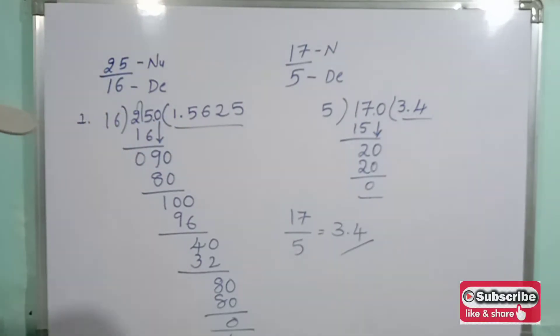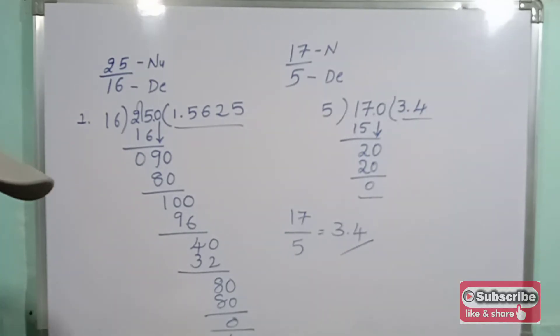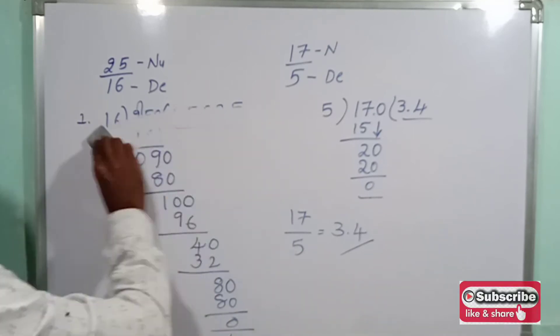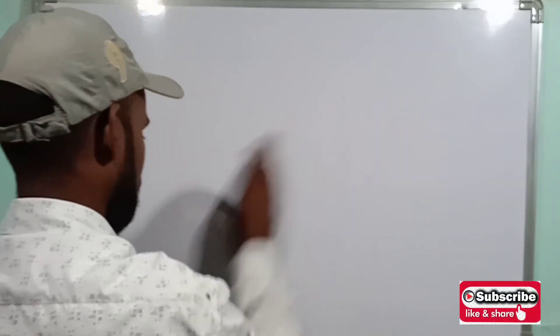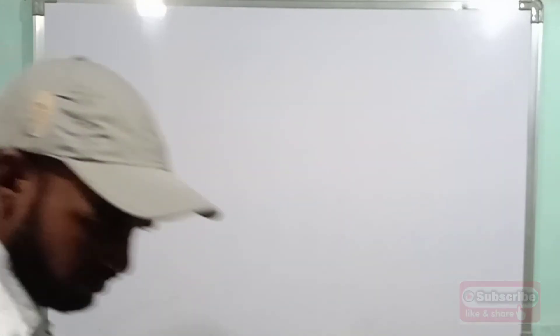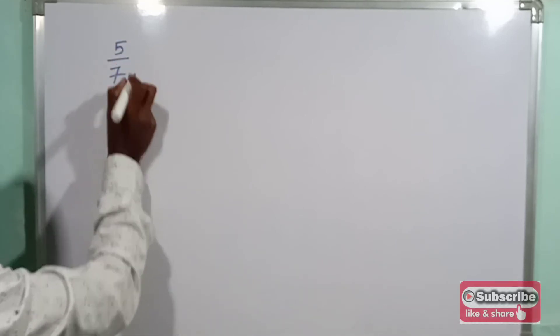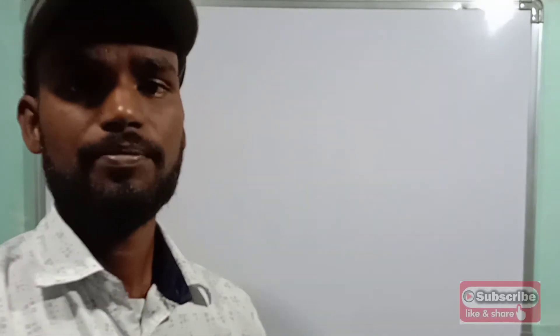These are called terminating decimals. Now we are going to learn non-terminating decimals. On page number 27, under non-terminating decimals, the example we are going to explain is 5 by 3. Unlike the previous examples, 5 by 3 will not terminate.